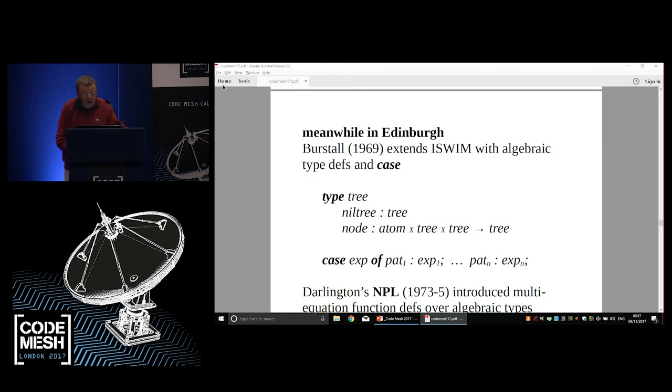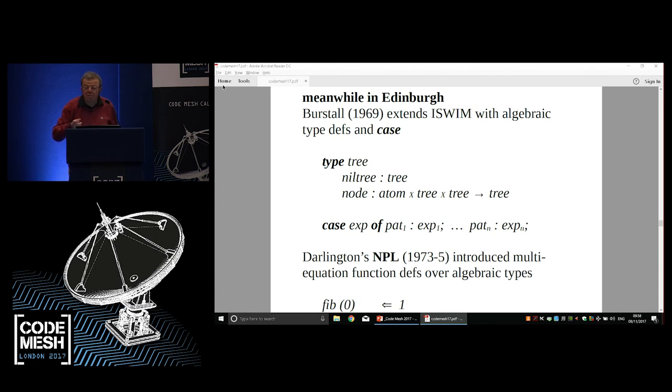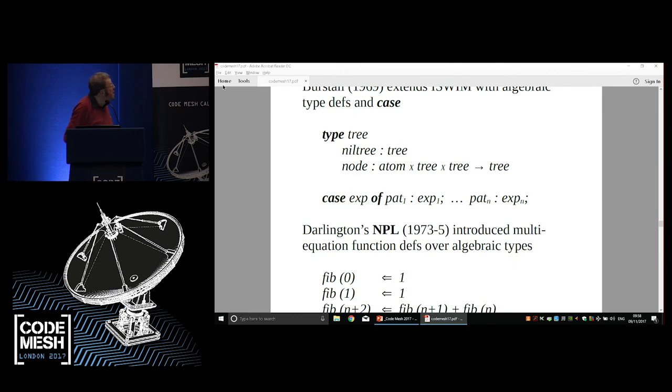Going back to the 1970s again, stuff was happening in Edinburgh. Burstall's 1969 paper on structural recursion introduces a formal notation for algebraic type definitions. There's a type tree which has an atom, a nil tree, and a constructor node which takes an atom and two trees and returns a tree. Burstall introduces case expressions and structural induction for proving things about algebraic data types.